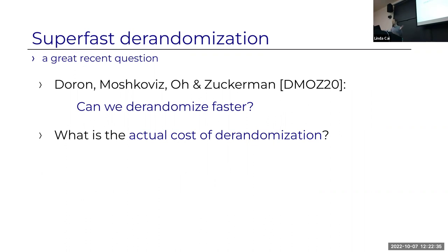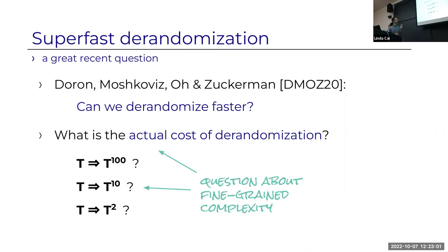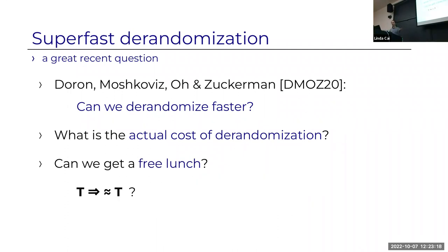It's been 30 years and we really care about that constant C now. A great question raised a couple of years ago by Ren and Roei Raz is: can we derandomize faster? What is the actual cost of removing randomness? If you start with time T, do you need to go to T-to-the-hundred, T-to-the-ten—still impractical—or T-squared, which tickles the border of practicality? This is a question about fine-grained polynomial complexity. And the most natural question is: can we get C equals one? Can we get a free lunch—derandomize probabilistic time T with deterministic time T?